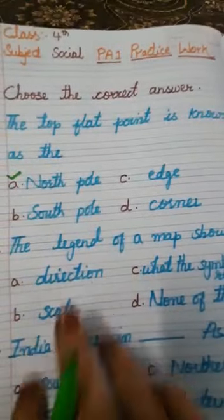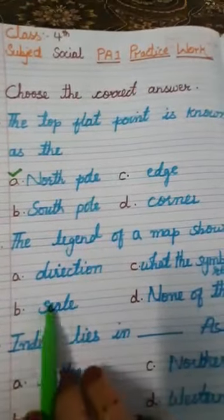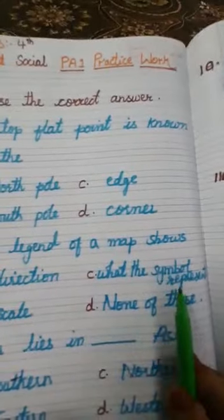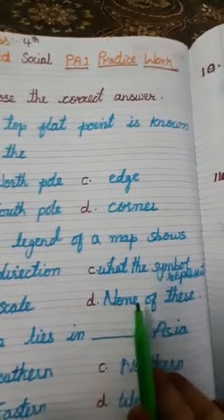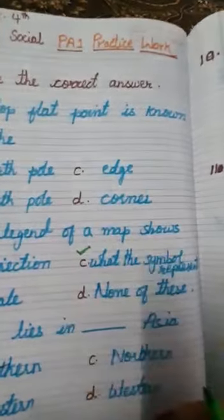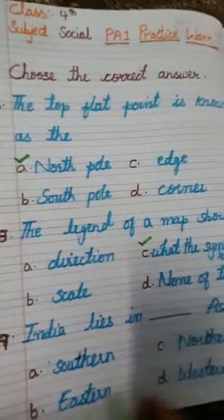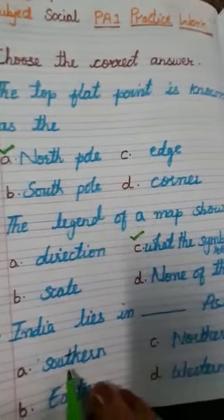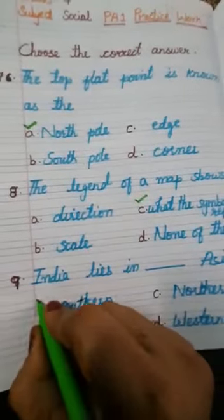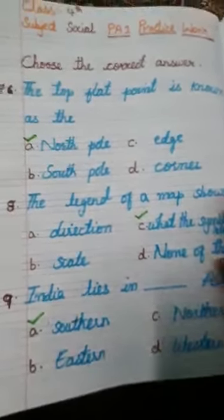The 8th one: the legend of a map shows — direction, scale, what the symbol represents, or none of these. The correct answer is: what the symbol represents. 9th one: India lies in dash Asia — southern, eastern, northern, or western. The answer is southern Asia.